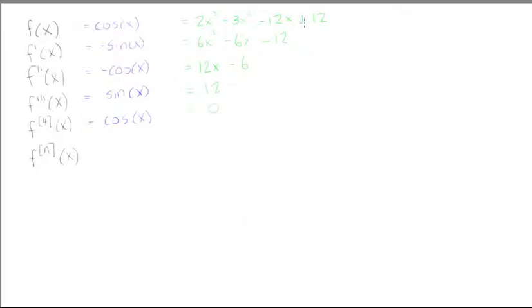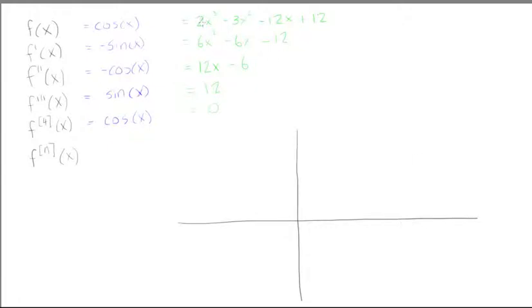So what are these good for? The first and second derivatives really help us in graphing the function. Since this is a cubic with a positive leading coefficient, it goes up as x gets large and down in the negative direction. If the coefficient were negative, the behavior would be reversed.